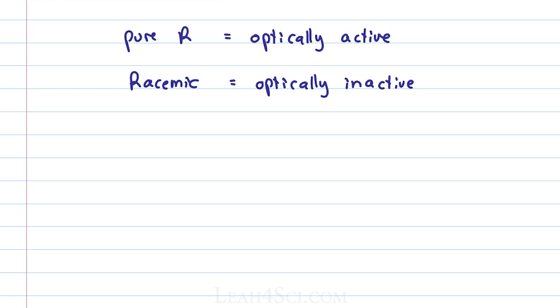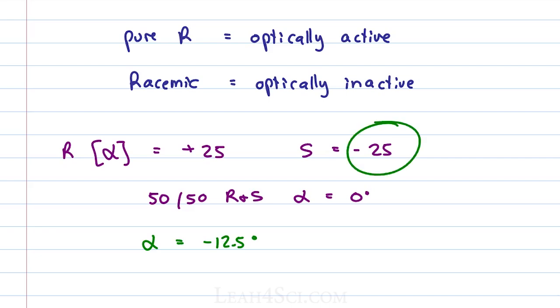Let's say the pure sample of some molecule has a specific rotation that is equal to positive 25. It turns light 25 degrees to the right and that would be for the R enantiomer, and that means the S enantiomer should be equal to negative 25. If we mix them together, so that would be 50-50 R and S, we get an alpha that is equal to zero degrees because it doesn't turn in either direction. But then what happens if I give you a sample that has some mix of R and S but the alpha comes out to be negative 12.5 degrees? That means it's turning to the left but not quite as much as we would expect for a pure sample.